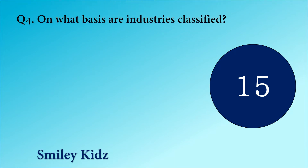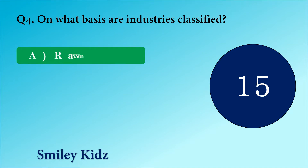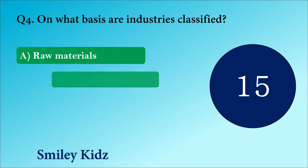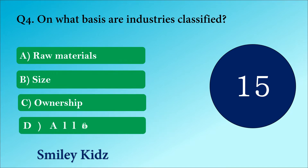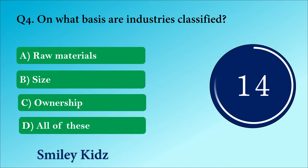Question number 4. On what basis are industries classified? The options are A. Raw materials, B. Size, C. Ownership or D. All of these.